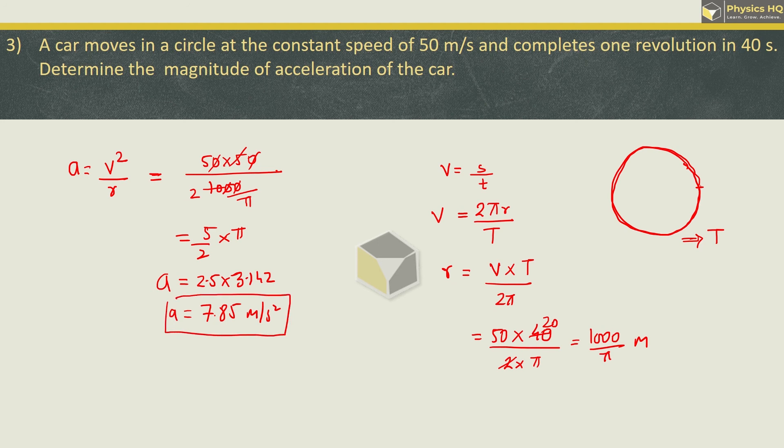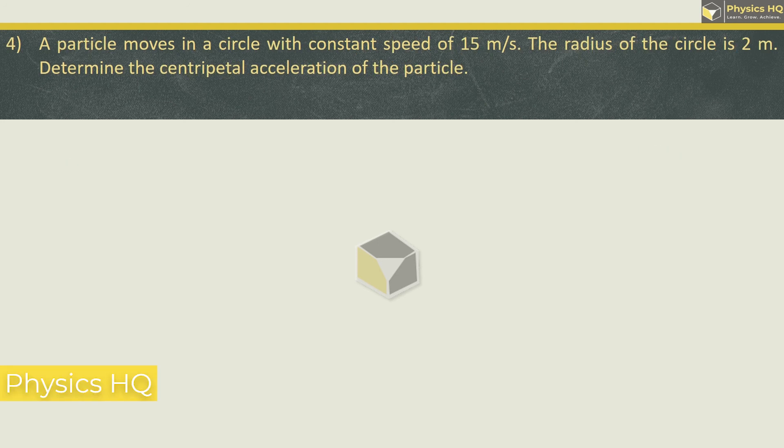Next sum: A particle moves in a circle with constant speed of 15 meter per second. The radius of the circle is 2 meter. Determine the centripetal acceleration of the particle. Using a equals v squared by r, we get 15 squared divided by 2, which is 225 by 2, giving us 112.5 meter per second square.